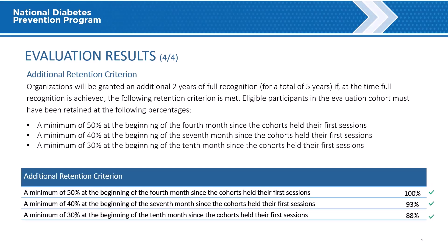Evaluation Results, part 4 of 4. Organizations can earn an additional 2 years in full recognition when eligible participants in the evaluation cohort have been retained at the following percentages: a minimum of 50% at the beginning of the 4th month, a minimum of 40% at the beginning of the 7th month, and a minimum of 30% at the beginning of the 10th month since the cohorts held their first session. In this example, the organization met the threshold with 100%, 93%, and 88%, denoted by the green check marks.